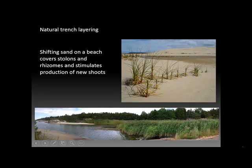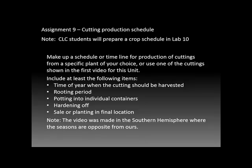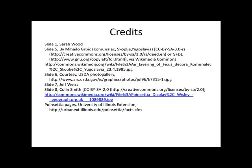That's an example of how plants can use these techniques without any human assistance. The discussion question is about layering — I'd like you to research and describe one plant which can be produced via layering, and also comment on why this process is not as important as other vegetative propagation techniques we're covering in class. The assignment for producing a crop schedule does not apply to CLC students in this course; we will be making up a crop schedule in our next lab, so don't worry about this assignment. That brings us to the end of this lecture — I hope it was helpful.